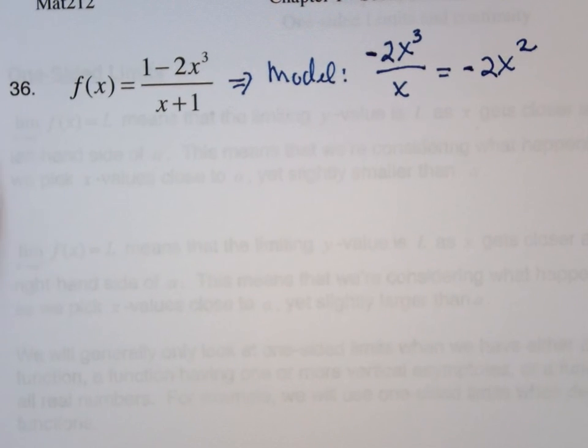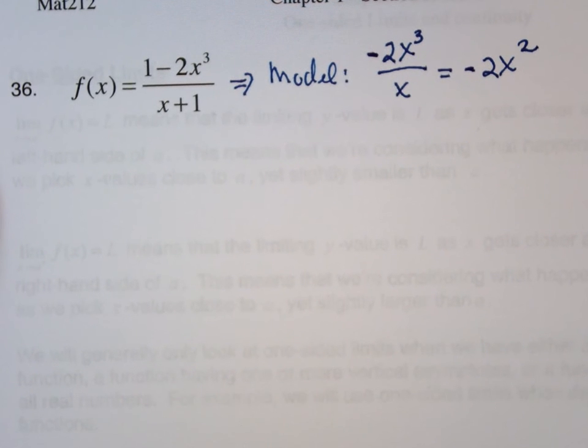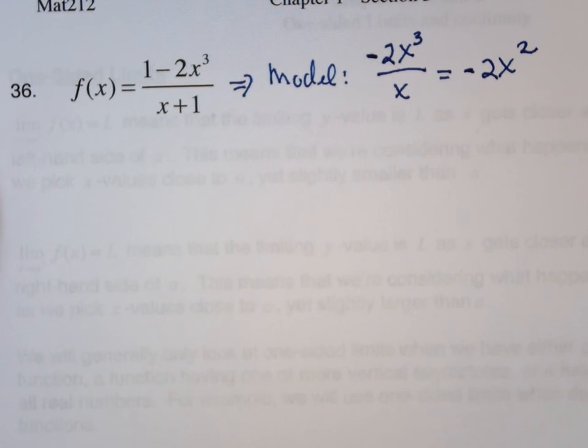That says as x is very, very large, negative 2x squared is what's going to be in control of what happens in the end. That's called the end behavior.